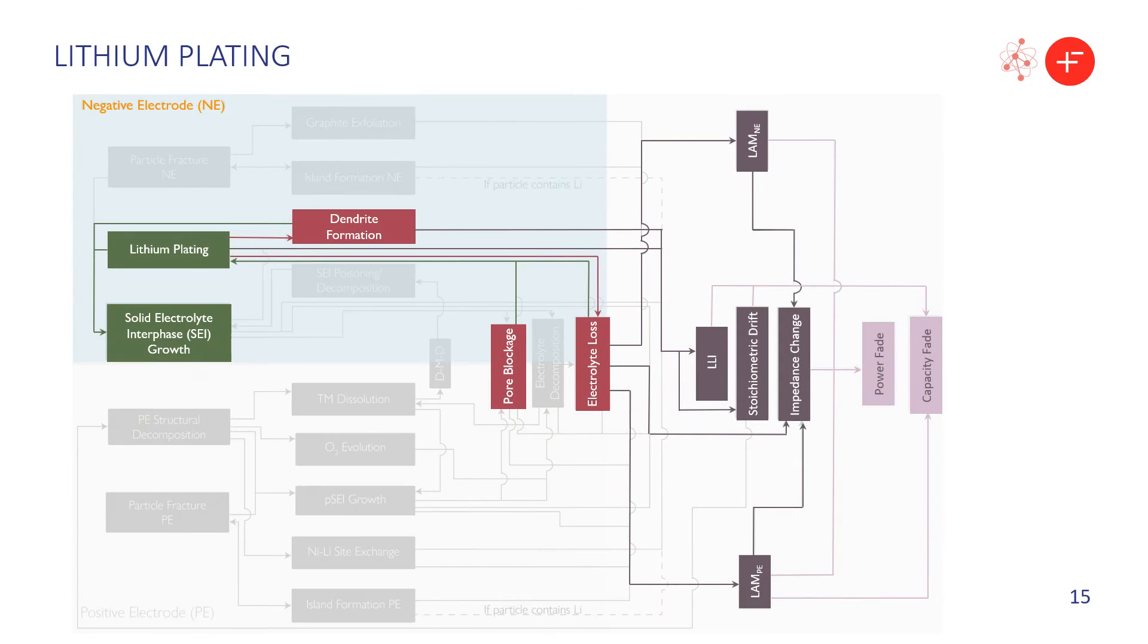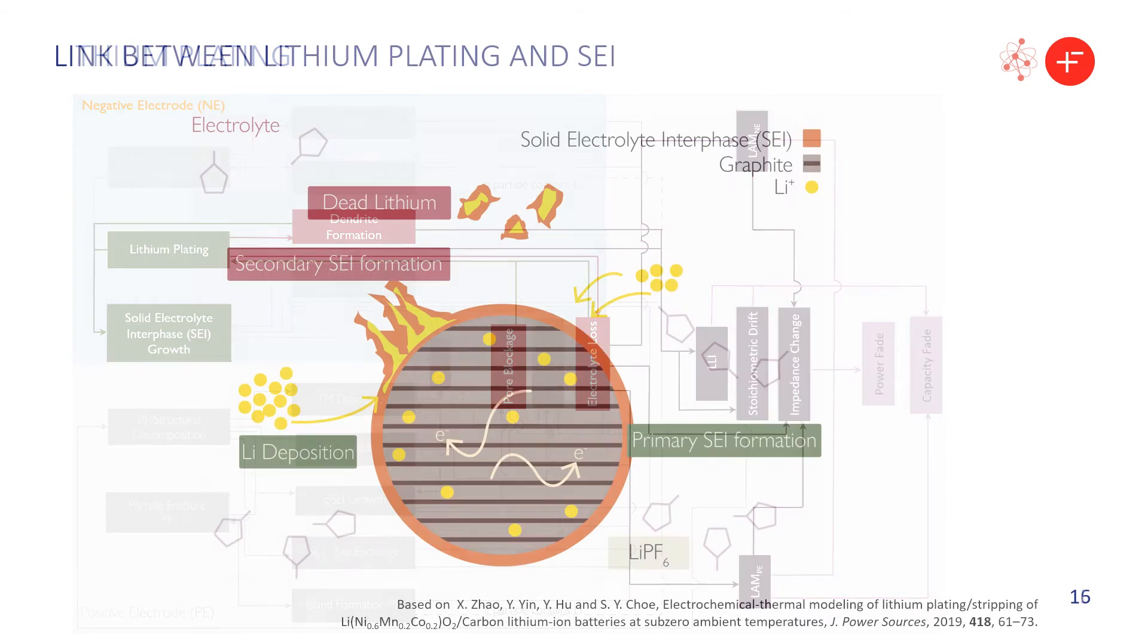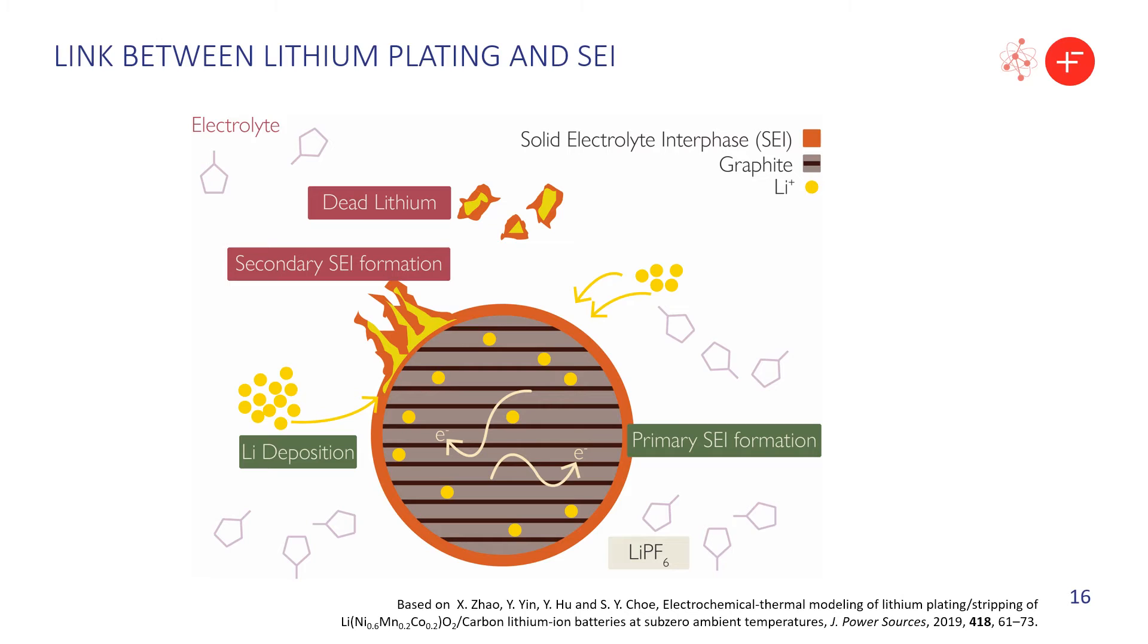The fifth primary mechanism is lithium plating, in which lithium forms metallic deposits on the negative electrode surface. These deposits can grow into long spikes called dendrites, which could pierce the separator and cause an electrical short circuit. The plating reaction can lead to loss of electrolyte. This figure shows the link between lithium plating and SEI growth, where secondary SEI layers may form on top of the lithium metal deposits.